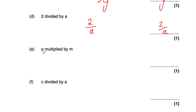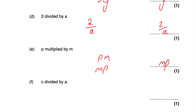Part e: p multiplied by m. When we multiply things in algebra, we just put them together — so p times m would be pm. We tend to write letters in alphabetical order, and m comes before p in the alphabet, so we write that down as mp. Whenever we're multiplying two letters in algebra, we just put them together, but try to write them in alphabetical order.